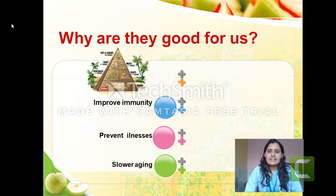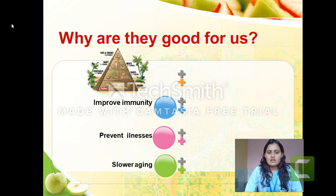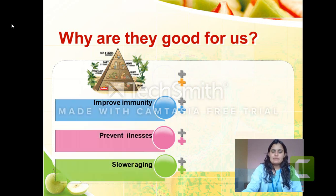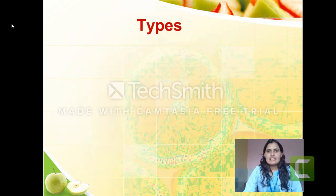Why are vitamins good for us? Why are they essential? Why is there a need to consume them? First, to improve immunity, because immunity is the most important part of our body functions. Second, to prevent so many illnesses and to slow the aging process, because so many vitamins have the function of healing and repair of epithelial tissue.